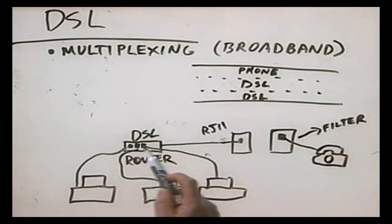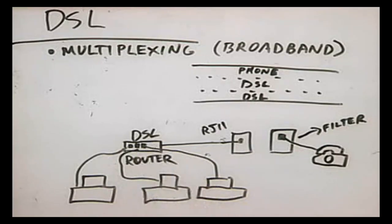Usually, this DSL router will also have a built-in DHCP server so you can configure your workstations to use TCP/IP. There's another internet connectivity option very similar to DSL, and that's the Integrated Services Digital Network, or ISDN. Like DSL, ISDN takes your phone line and divides it into multiple channels. However, there are different levels of service with ISDN.